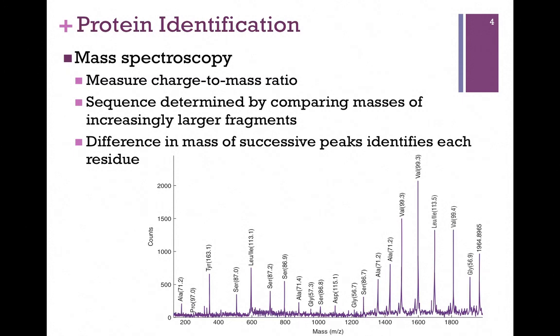Let's see how that works. In our illustration here, the charge-to-mass ratio, or mass, is on our x-axis, increasing from left to right, so our smallest fragments are on the left and our largest are on the right. On the y-axis, we have the counts - that is, the prevalence of those fragments.